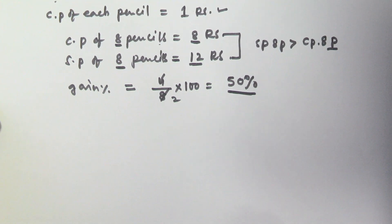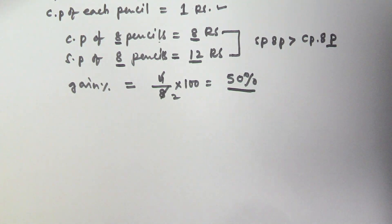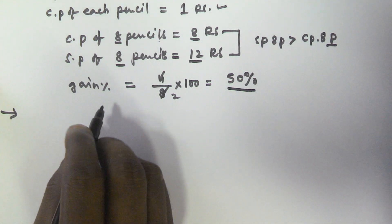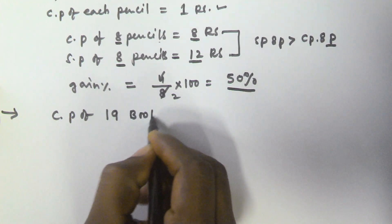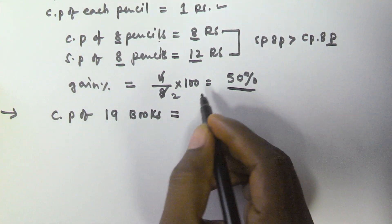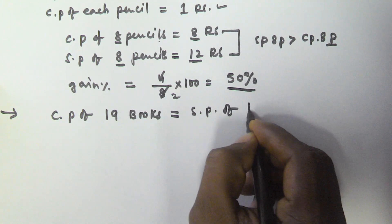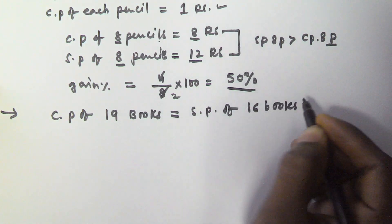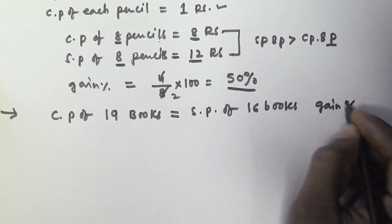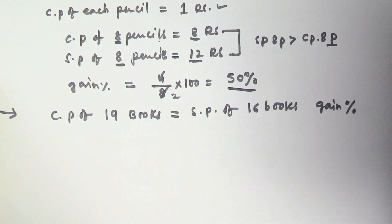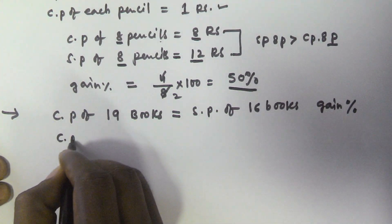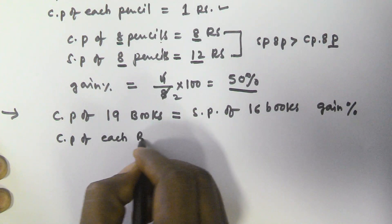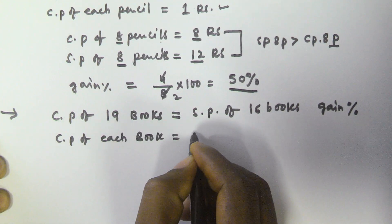Let us see another example, similar to the previous question. The cost price of 19 books is equivalent to the selling price of 16 books. We have to find the gain percentage. Let us assume the cost price of each book is equal to 1 rupee.